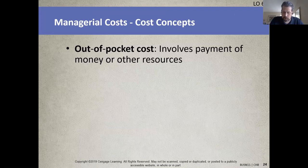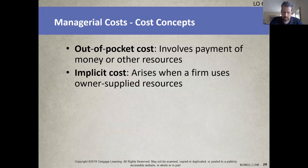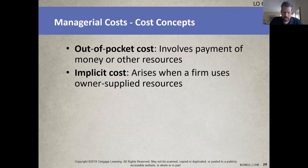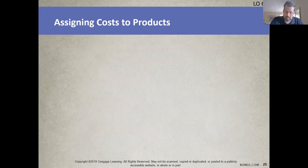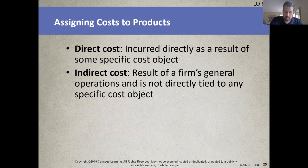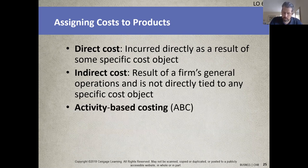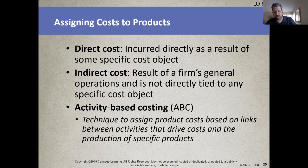Cost is the value of what is given up in exchange for something else. Examples of opportunity costs include wages paid to workers and payments to suppliers for raw materials. Fixed cost examples include interest on bank loans and property insurance premiums. Variable cost examples include payments for labor, supplies, and utilities. Direct cost examples include wages paid to workers directly involved in producing a good or service. Indirect cost examples include plant maintenance, quality control, or depreciation on office equipment. It is easier to measure and assign direct costs than indirect costs. One method managerial accountants use to allocate costs is activity-based costing.